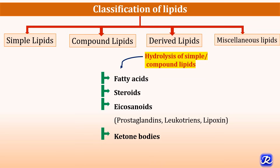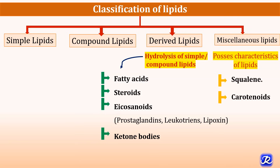The fourth class is miscellaneous lipids. They possess the characteristics of lipids but do not fall into the other categories. Examples include squalene, which is formed during the synthesis of cholesterol, and carotenoids.